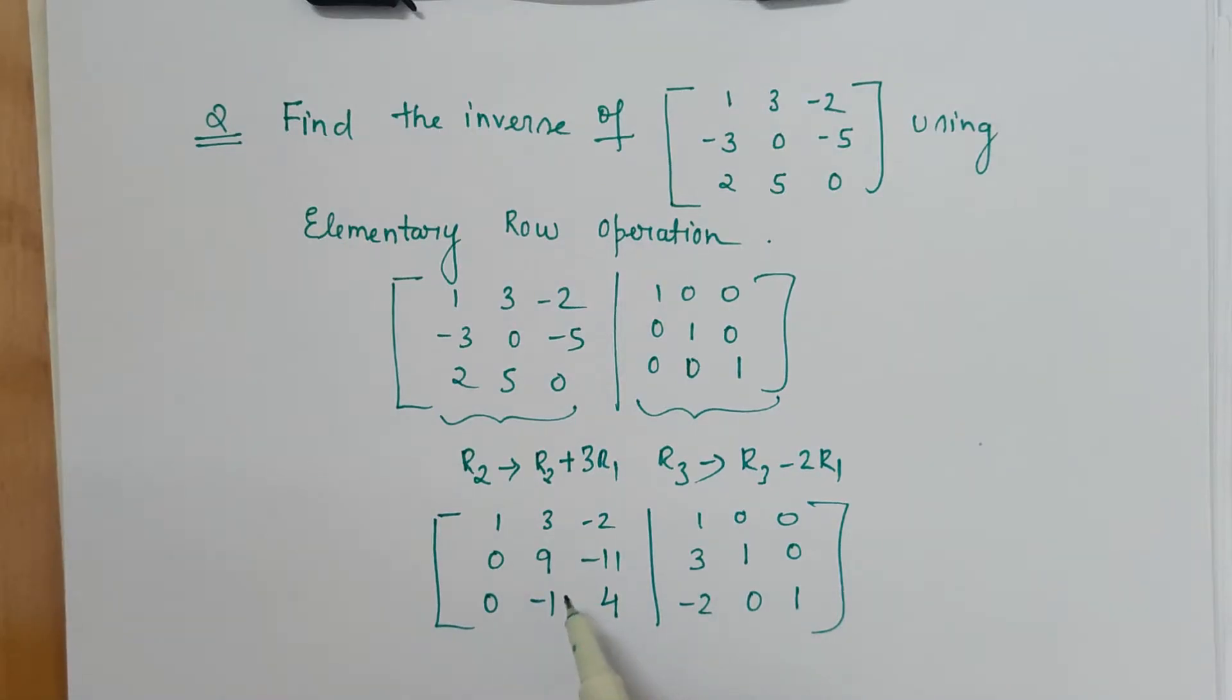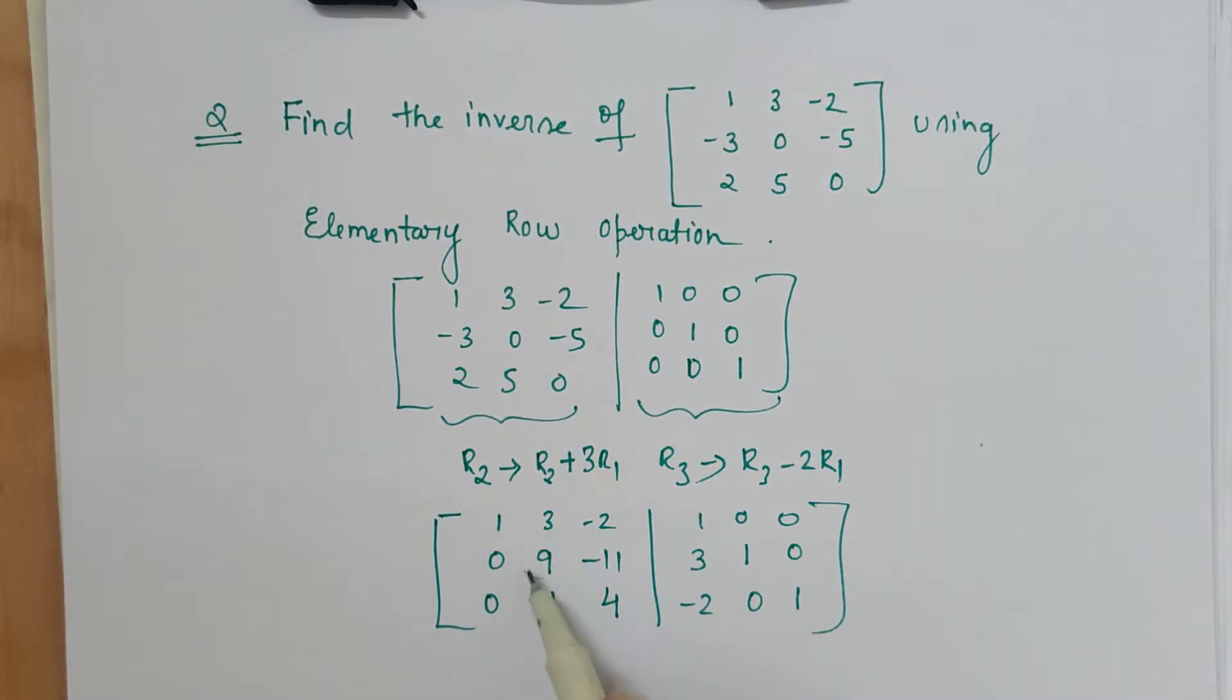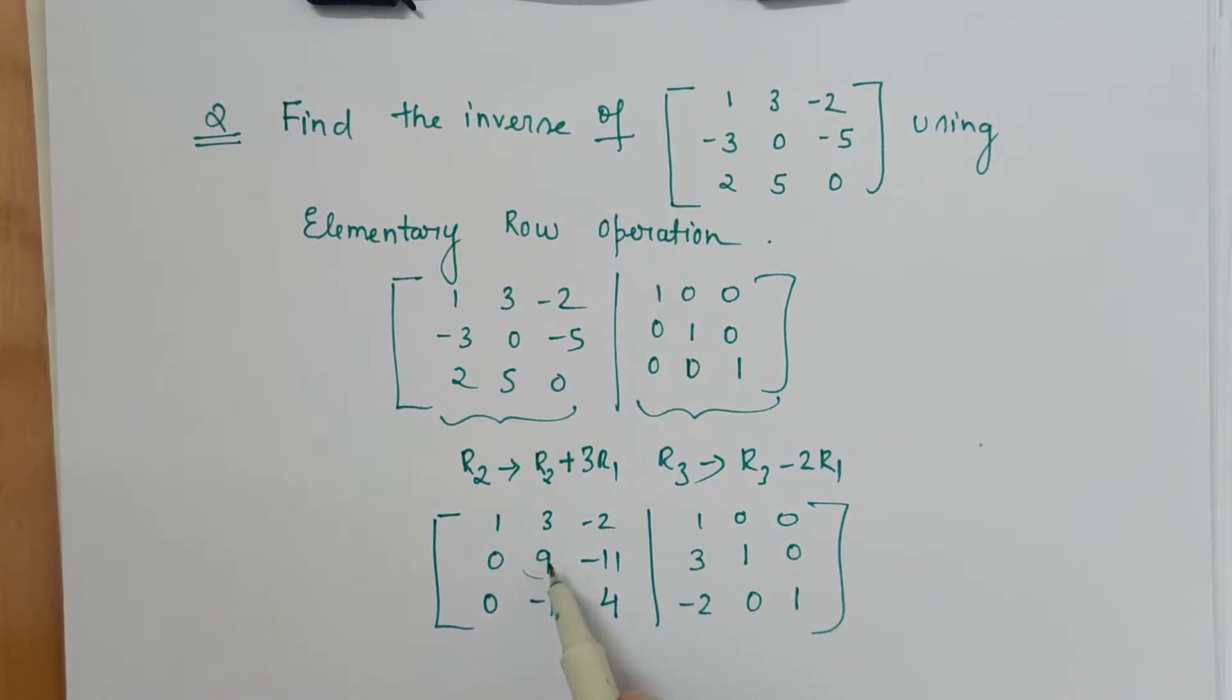Now our next step is to make this entry as 1. How we can make it 1? By shifting this over here, that will be a more easier way to make this entry as 1. We have to see if we can avoid any fraction occurrence in these steps. So I will interchange these two rows. R2 is swapped with R3.